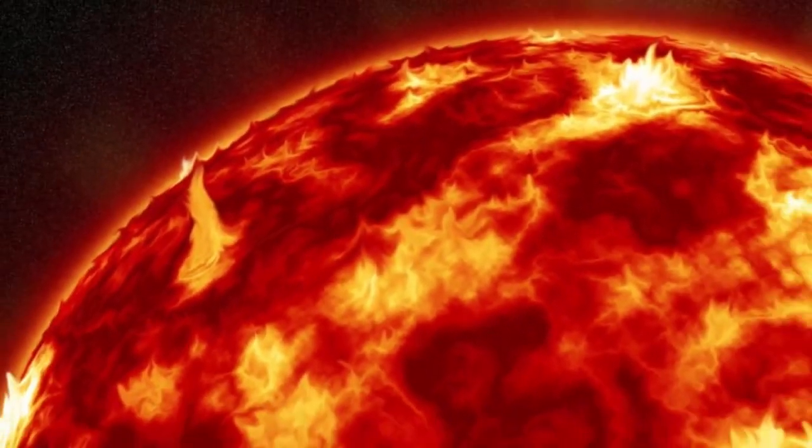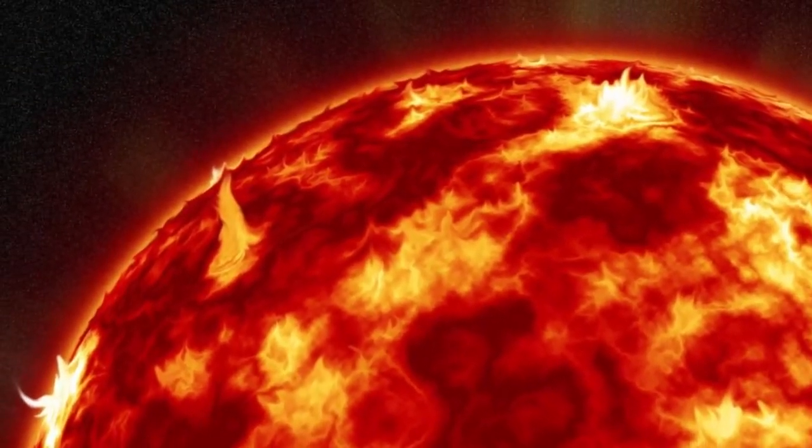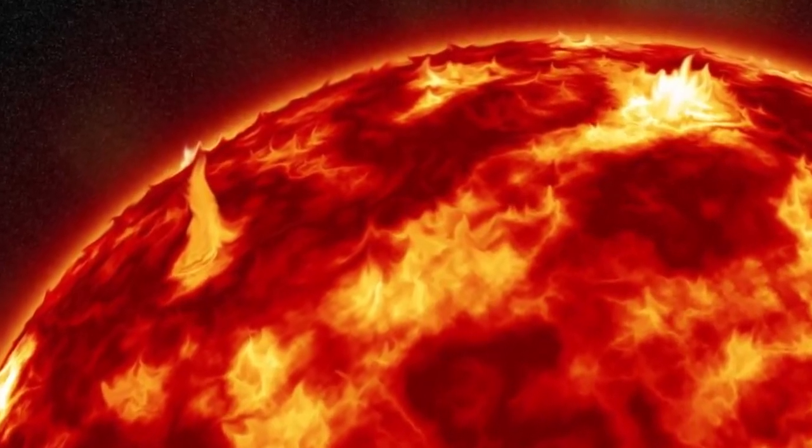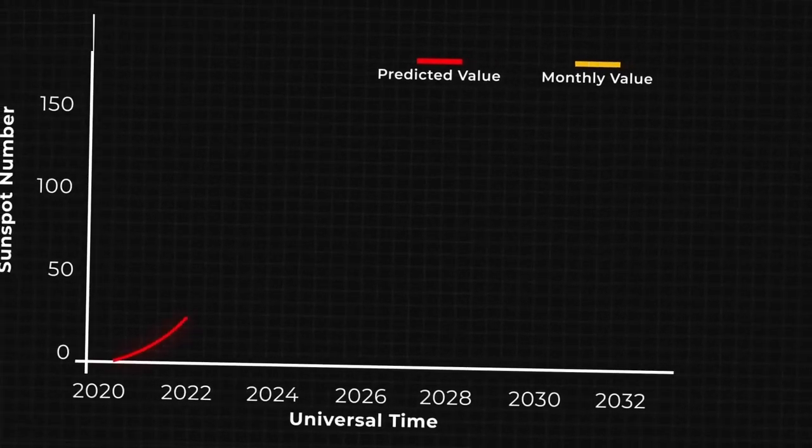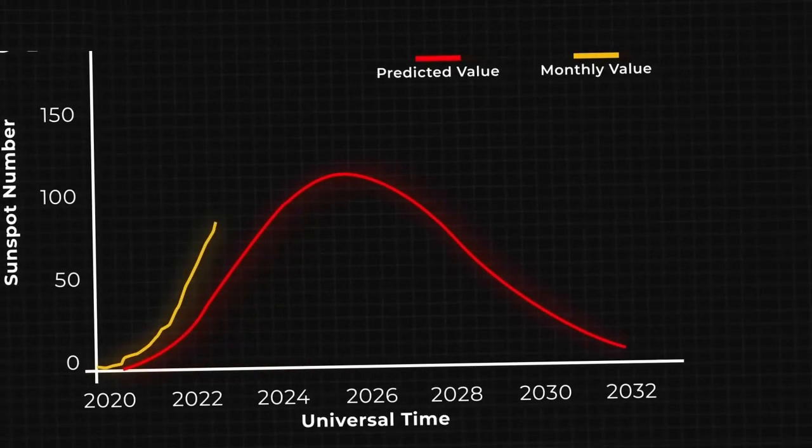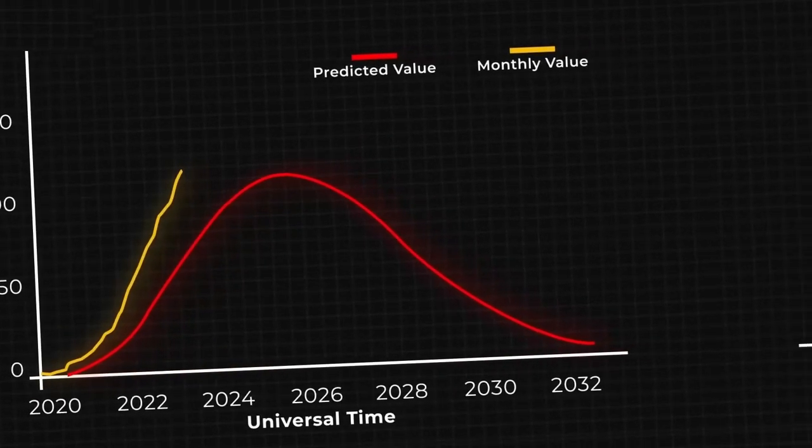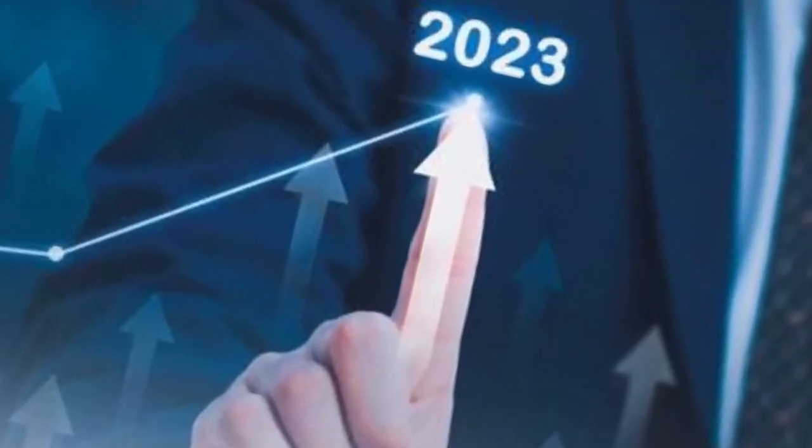Solar Cycle 25, which we are currently experiencing, has surprised scientists with its intensity and early peak. Initial forecasts predicted a peak in 2025, but recent updates suggest an earlier peak in 2024, with higher-than-expected sunspot numbers.